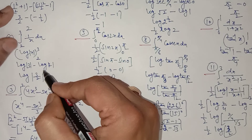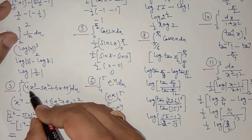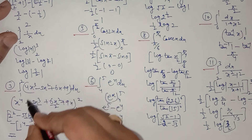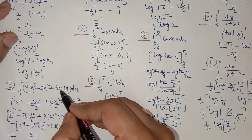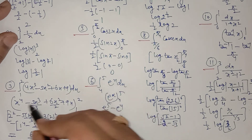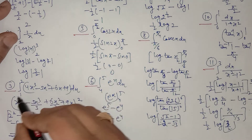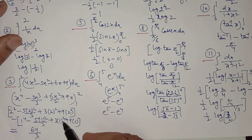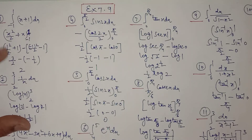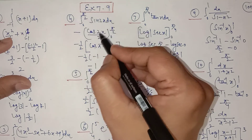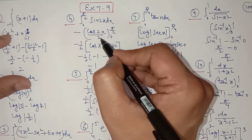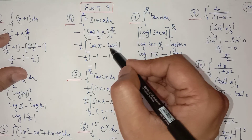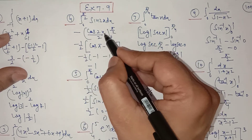For the integral from 2 to 3 of 1/x with respect to x, the antiderivative is log|x|. Evaluating: log 3 − log 2 = log(3/2), using the property of logarithms. For the integral from 1 to 2 of (4x³ − 5x² + 6x + 9) with respect to x, integrate term by term: x⁴ − 5x³/3 + 3x² + 9x, then substitute the upper and lower limits and subtract to get the value.